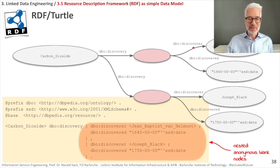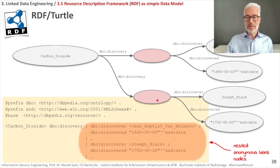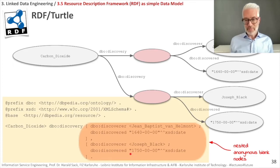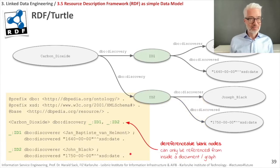For example: carbon dioxide has a discovery associated with a blank node, inside which Jan Baptist van Helmont is the discoverer and 1640 is the date; a comma then leads to another blank node for Joseph Black discovered in 1750. Be careful with these structures as they can become quite complex when blank nodes act as both subjects and objects.